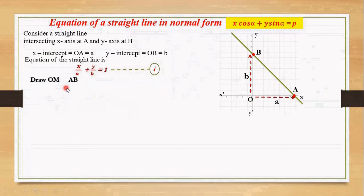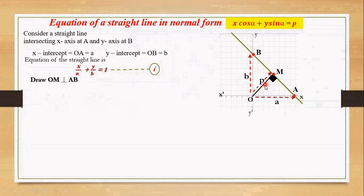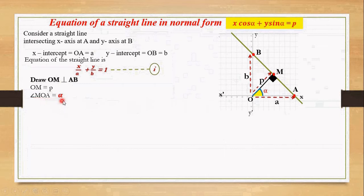Now let's draw OM perpendicular to AB. Here OM is perpendicular to AB. Let's denote the length of the perpendicular OM by the letter P, and angle MOA equals to alpha.